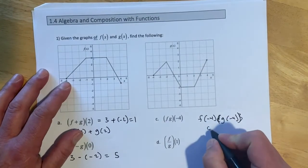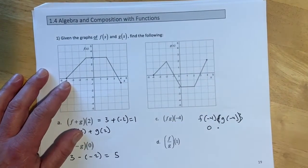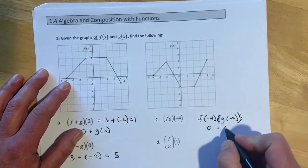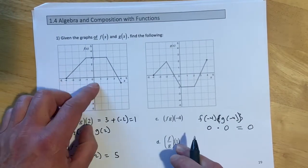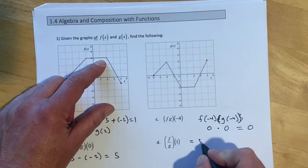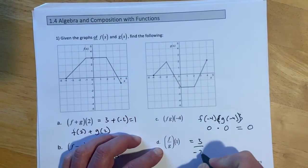Over here we had f evaluated at negative 4, which is 0, so that pretty much means this is going to come out to 0 because of the multiply. g is also 0, so that makes 0. And then f evaluated at 1 is 3, and g evaluated at 1 is negative 2.